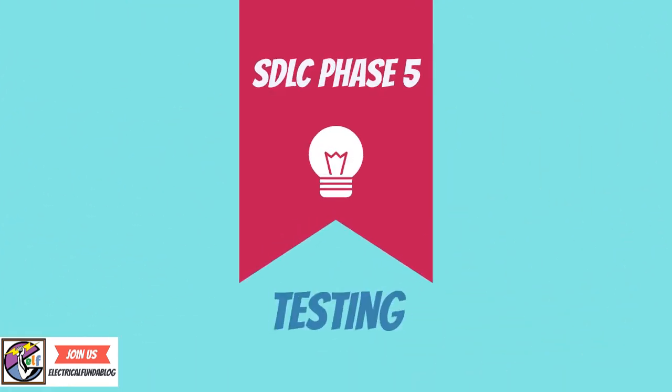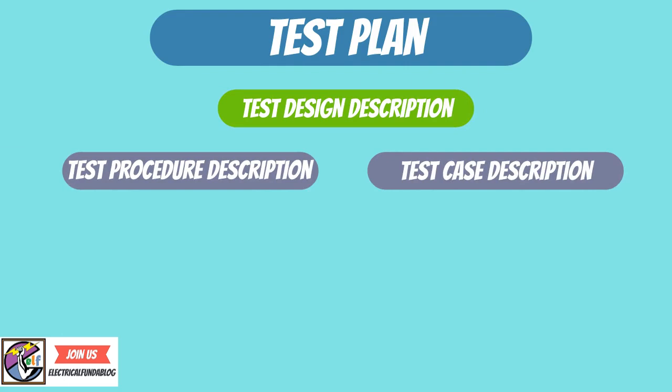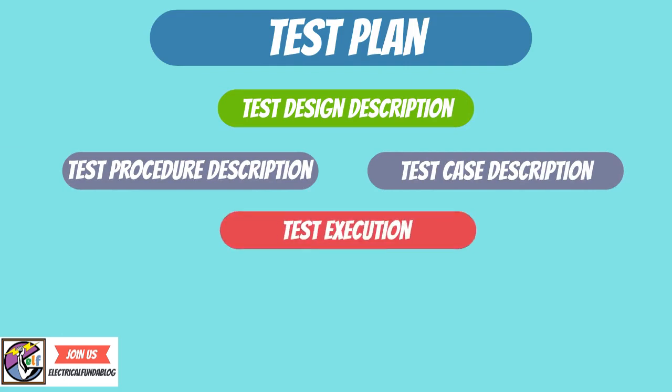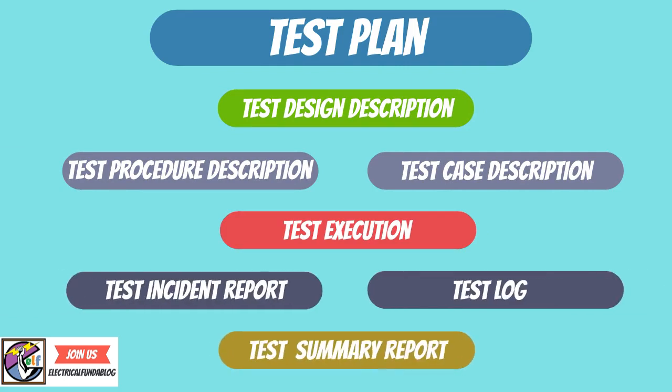Once the software is complete, the Testing team checks the functionality of the system as per the design documents shared with them. During the testing phase, the QA and testing team may find some defects. The development team fixes the bugs and sends it back to QA with the updated design document, if needed, to retest.